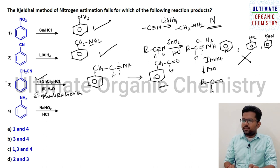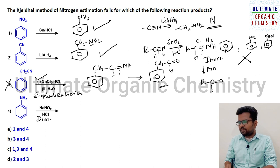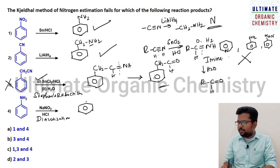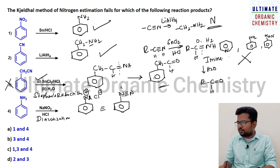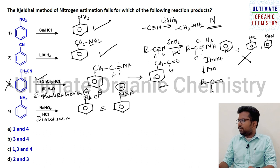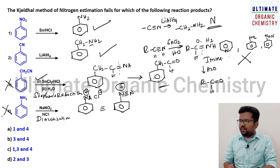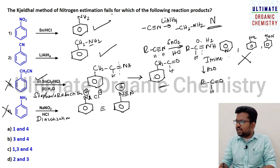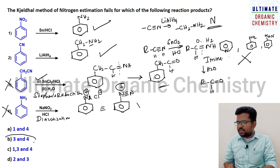When aniline is treated with sodium nitrite and HCl — diazotization — it is converted into benzene diazonium chloride salt (N2+ Cl-). This is an azo compound. The Kjeldahl method does not work for ring-nitrogen-containing compounds, nitro groups, or azo compounds. Both the Stephen's reduction product and the diazonium salt fail the Kjeldahl test. So answers three and four both fail — the right answer is option B.